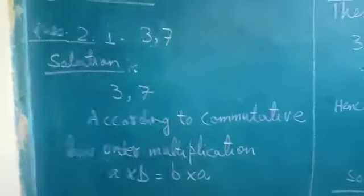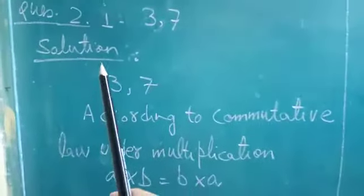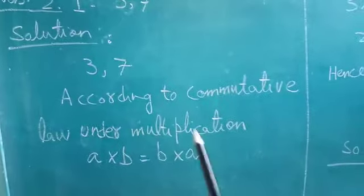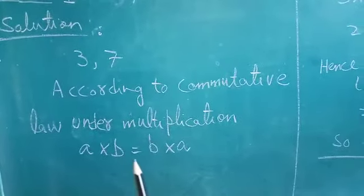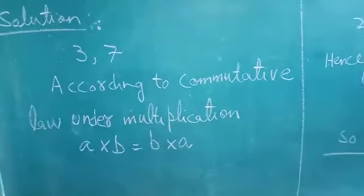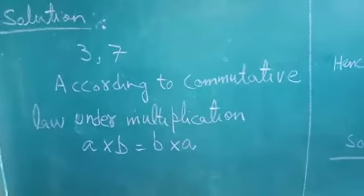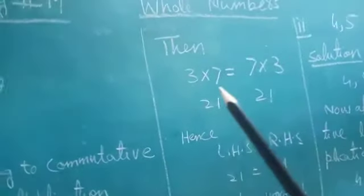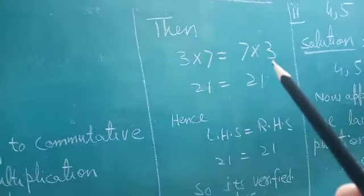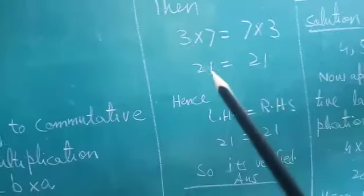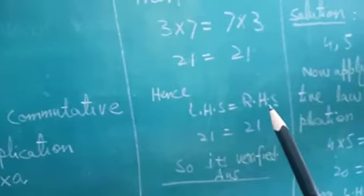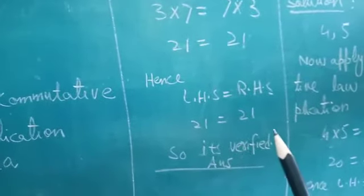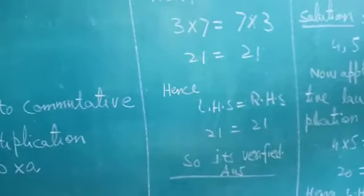Question number 2, part one: 3 and 7. According to the commutative law under multiplication, A × B = B × A. So if we multiply A by B, the answer will be the same as B by A — left hand side and right hand side will remain equal. We have two digits: 3 and 7. So 3 multiplied by 7 equals 7 multiplied by 3. Three 7s are 21 and seven 3s are 21. Hence left hand side is equal to right hand side, that is 21 = 21. So it's verified.